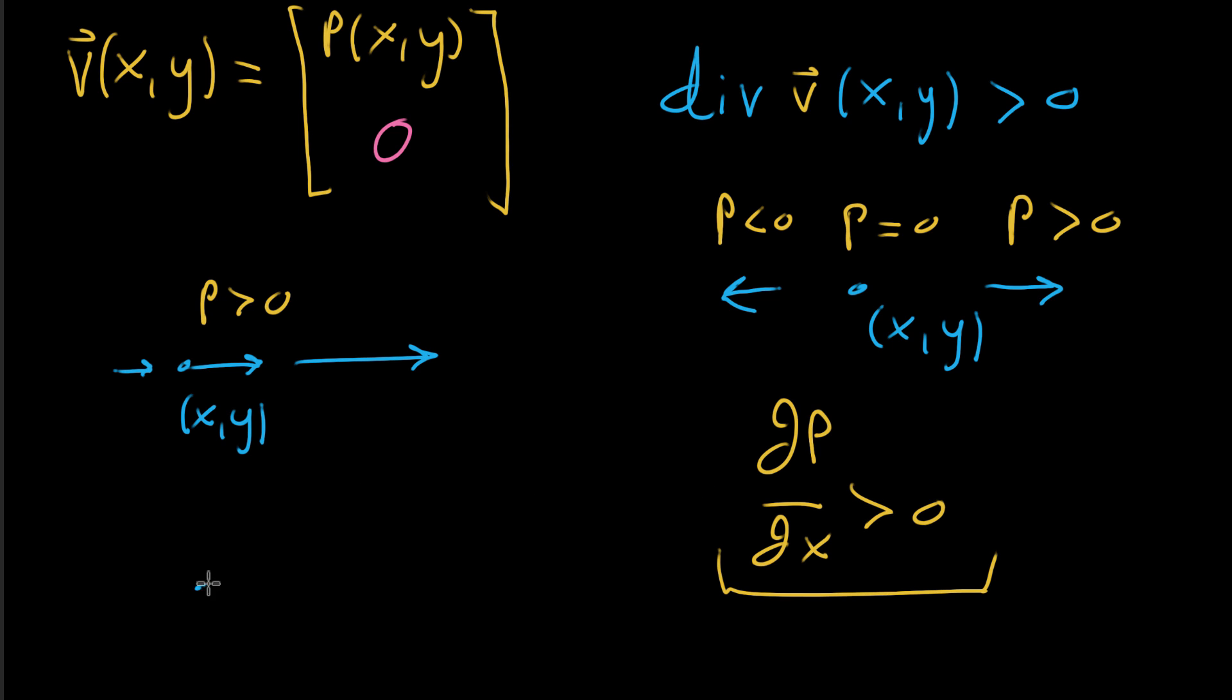And you can even look at it if you go the other way, where you have a little bit of negative component to p here. So p is a little bit negative. But to the left of your point, it's really negative. And then to the right, it's not nearly as negative. And in this case, it's kind of like as you're moving to the right, as x is increasing, you start off very negative, and then only kind of negative, and then barely negative. And once again, that corresponds to an increase in the value of p as x increases.